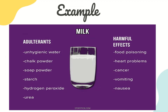Here's an example: a common example is milk, as it is used in daily life. The adulterants used in milk are chalk powder, soap powder, starch, hydrogen peroxide, and water. These adulterants have many harmful effects.